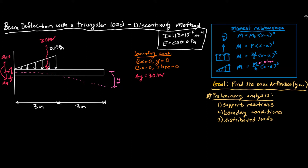Ay is going to be 30 kilonewtons and we need to calculate our moment. Our moment is going to be going this way with the arrows drawn, because we have forces going down here - that's going to be causing this to rotate this way. So our moment needs to counteract that. It's just going to be 30 kilonewtons times two meters. So our Ma here is going to be 30 times two, which is 60 kilonewton meters.